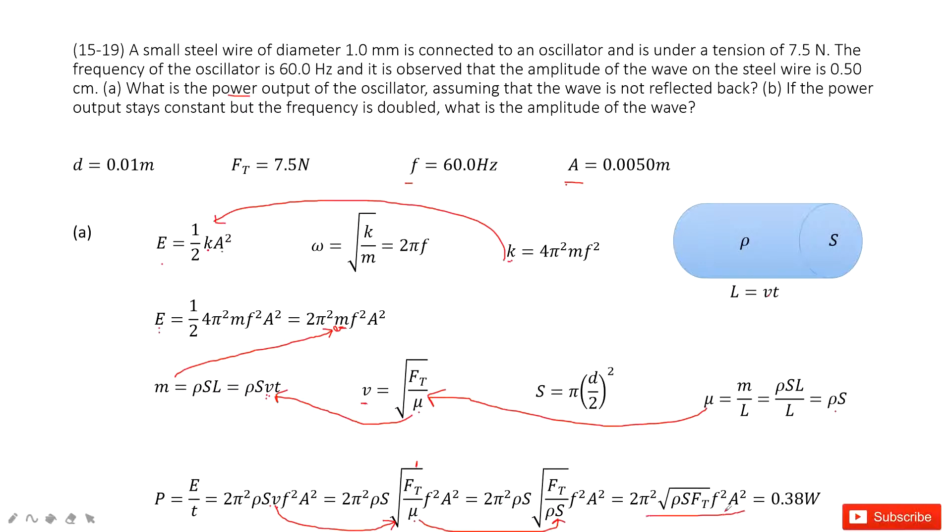Now in this function, all the quantities are given. You can see f is given, A is given, and ρ is given, Ft is given, S is called cross-sectional area, it's πR squared. Input known quantities, you get the answer.